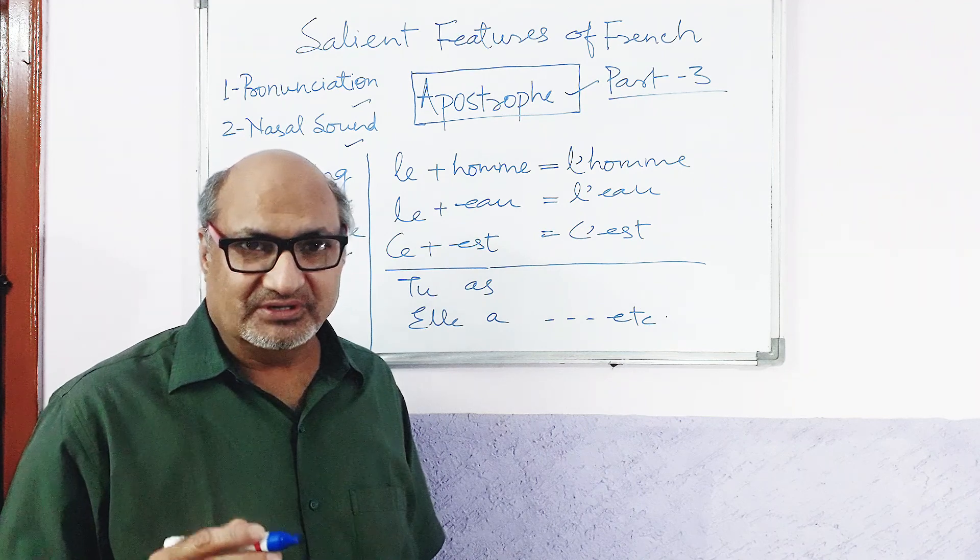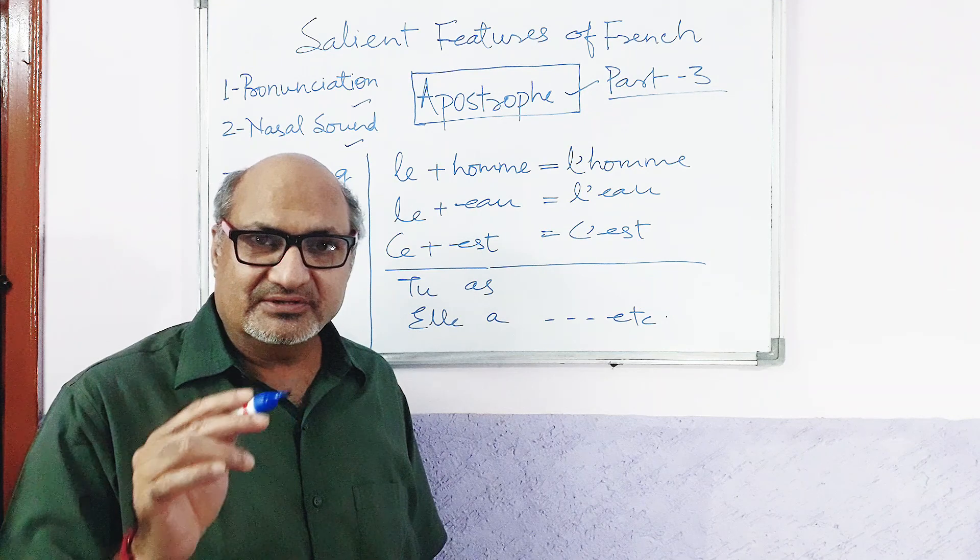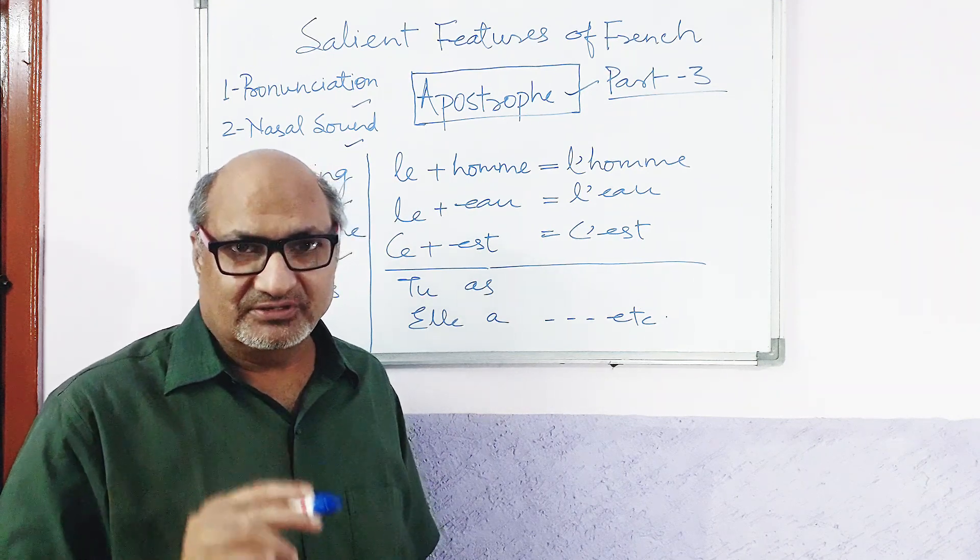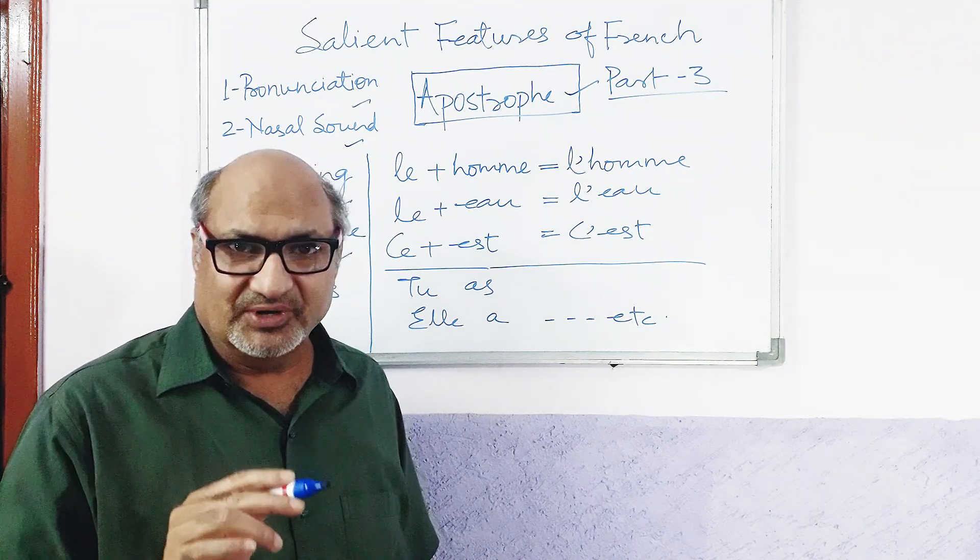John's book. John, apostrophe s, then book. Means book of John. It denotes a possession. John's book. Number one.